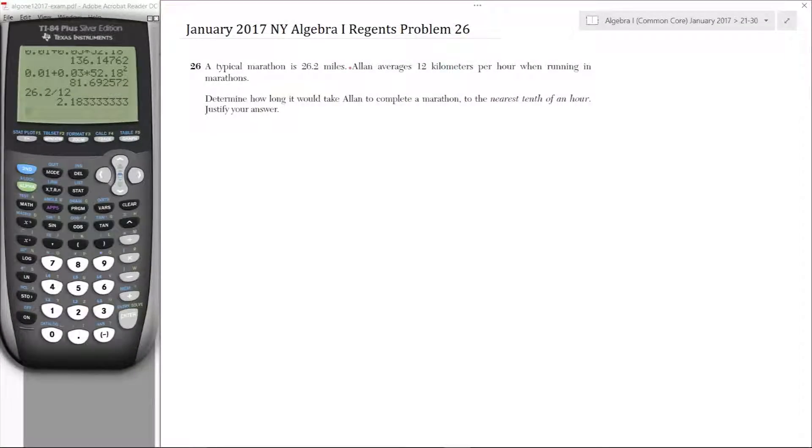Here's problem 26. A typical marathon is 26.2 miles. Alan averaged 12 kilometers per hour when running in marathons. Determine how long it would take Alan to complete a marathon to the nearest tenth of an hour. Definitely try the problem on your own. See if you get the same answer that we do.